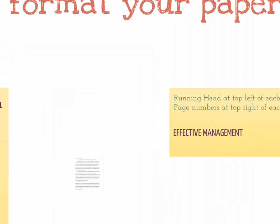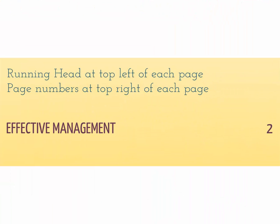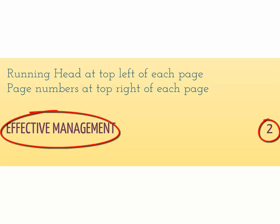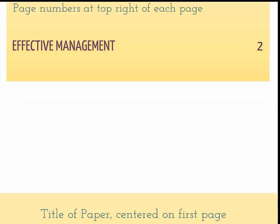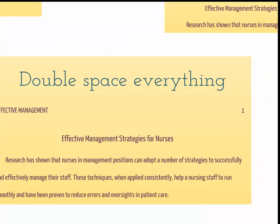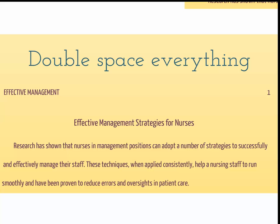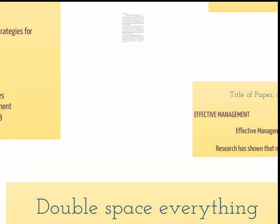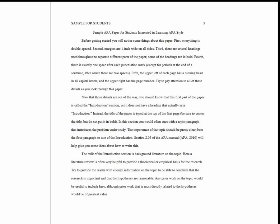Now format the rest of your pages. From here on, your header has just the shortened title in all caps and the page numbers. The title of your paper is centered on the first line. Your first paragraph starts on the next line. Your entire paper is double spaced. Here's an example of what your first page will look like.